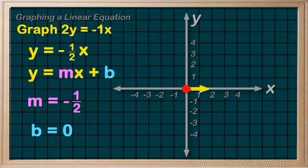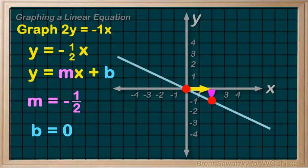So we have a run of two and a rise of negative one, which means we'll be going down one. And we'll make our second point and we can draw our line through it.